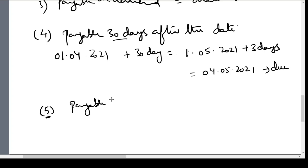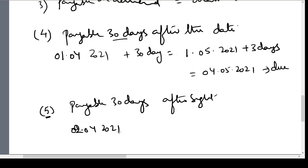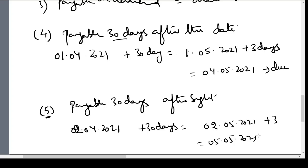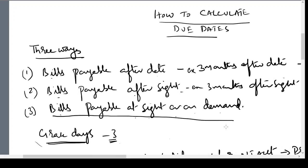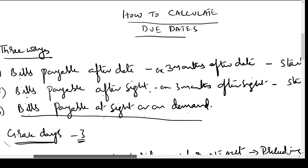For payable 30 days after sight, the date of acceptance is 2nd April 2021. Adding 30 days gives 2nd May 2021, plus 3 days of grace gives 5th May 2021 as the due date. These are the fundamental rules for calculating due dates. In our next video, we will learn a few more illustrations and examples on calculation of due dates. Thank you.